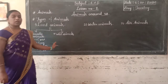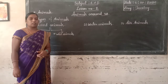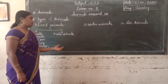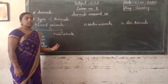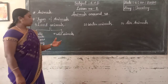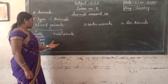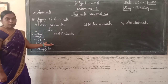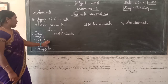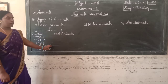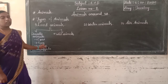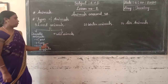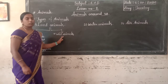These domestic animals are very useful to us. Domestic animals help us — they give us food. For example, the cow gives us milk, which is very useful for us. Also, the dog guards our house and protects it.